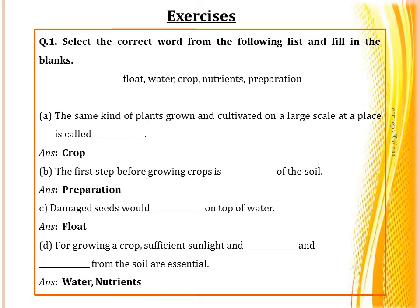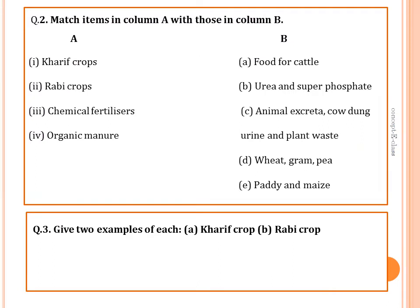The second question is match the following. Column A consists of kharif crops, rabi crops, chemical fertilizers, and organic manure. Column B has: food for cattle, urea and super phosphate, animal excreta, wheat, gram, pea, paddy, and maize. We have to match the following.